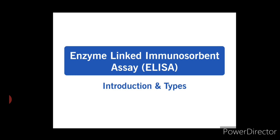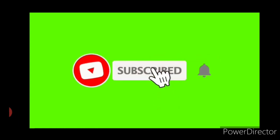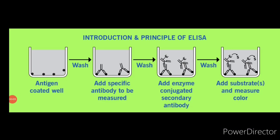Enzyme-linked immunosorbent assay, commonly known as ELISA, is similar in principle to RIA but depends on an enzyme rather than a radioactive label. An enzyme conjugated with an antibody reacts with a colorless substrate to generate a colored reaction product. Such a substrate is called a chromogenic substrate. A number of enzymes have been employed for ELISA, including alkaline phosphatase, horseradish peroxidase, and beta-galactosidase.